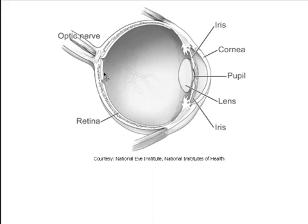As light strikes that surface, it stimulates those cells, and those stimulations pass along the optic nerve, sending the signal to our brains. Our brains are where those signals are interpreted, and we can interpret them as different colors, different shapes, light and dark, things of that nature.